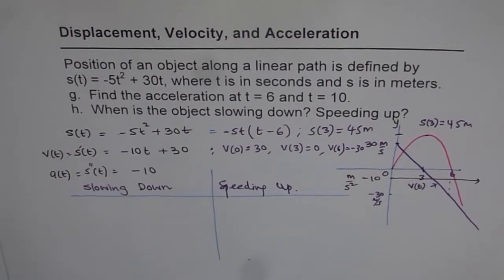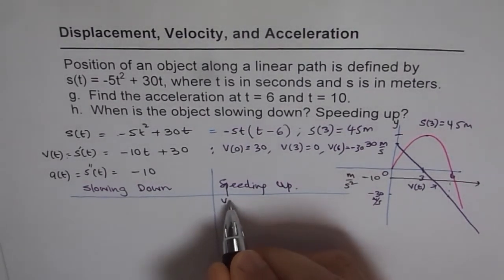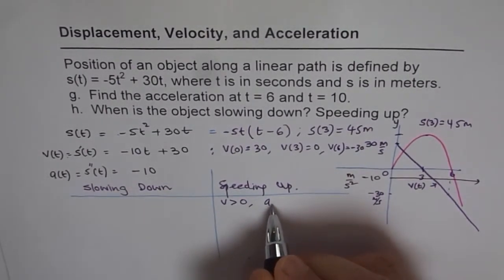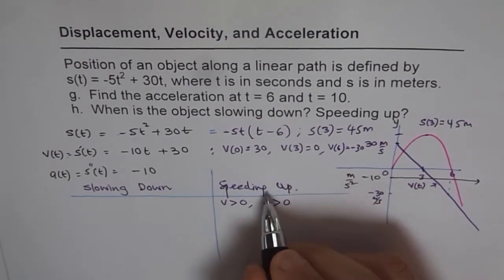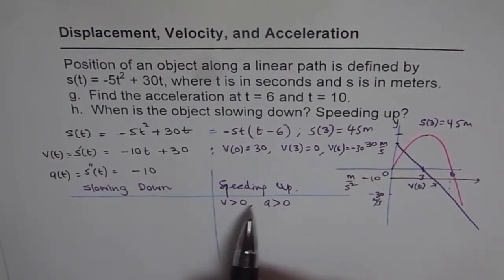We'll start with speeding up. Let's say we're moving north and accelerating. When moving north, velocity is positive, so v > 0. When accelerating, a > 0. You're speeding up. What we notice is the direction is same for both. If both are positive, we're speeding up.